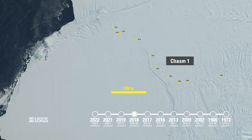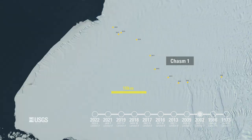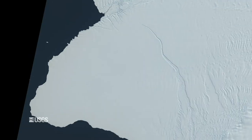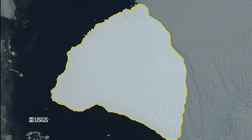A large iceberg could form if Chasm One continues to lengthen. Estimates suggest it would cover about 1,700 square kilometers — a little bigger than the island of Oahu.